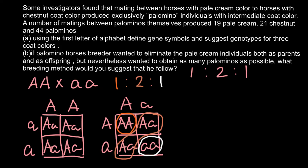Now we move to question B. If a Palomino horse breeder wanted to eliminate pale cream individuals both as parents and offspring, but still wanted to obtain as many Palominos as possible, what breeding method would you suggest? Since we cannot use pale cream horses as parents, that leaves us only two variants: Palomino (genotype capital A small a) and chestnut (genotype capital A capital A).